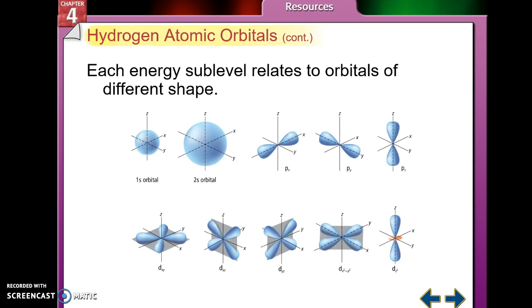If you look at the 1s orbital and the 2s orbital, they have the same shape because they're both the S sub-level, but 2s is bigger than 1s because it indicates a larger or higher energy level. The P orbitals, since there are three of them, are oriented on the X, Y, and Z axes, and the D sub-level orbitals are shaped like dumbbells.